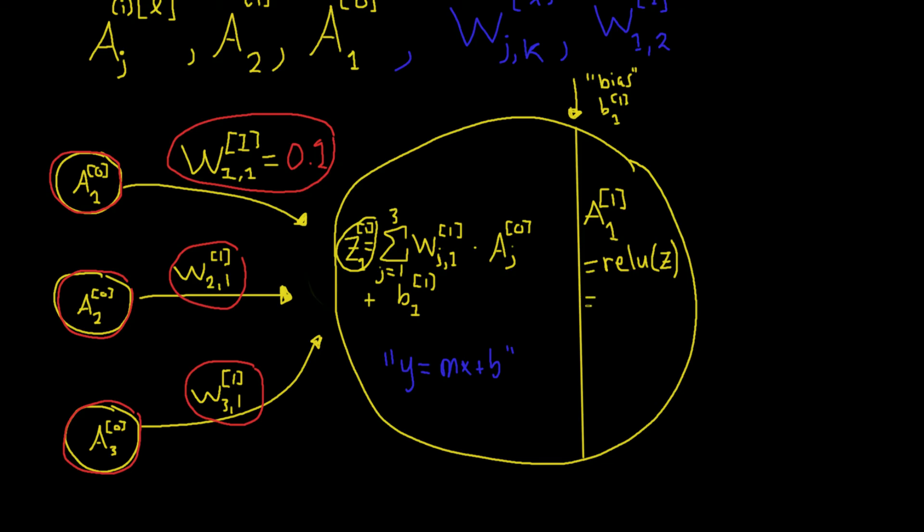So what we'll do is the relu function is a quite simple function actually. It's the maximum of zero comma Z. So what does it do? Well, if Z is greater than zero, then it will just pick Z. If Z is negative, anything less than or equal to zero will be set to zero. So literally, it just lets everything pass through if it's not negative. If it's positive, it lets it pass. If it's negative, then it sets it to zero.